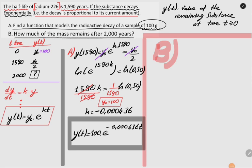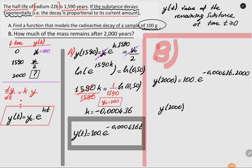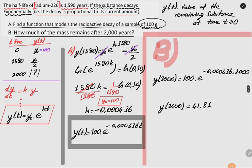For part b, how much mass remains after 2000 years? We simply plug in t = 2000: y(2000) = 100·e^(−0.000436 × 2000), which gives approximately 41.71 grams. Let's highlight this result. My dear friends, I have one more question to solve for exponential change. Until my next video, take care of yourselves.